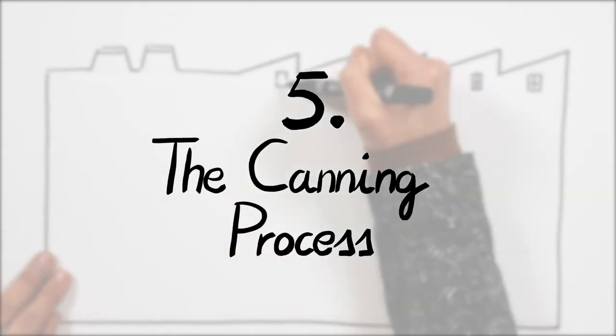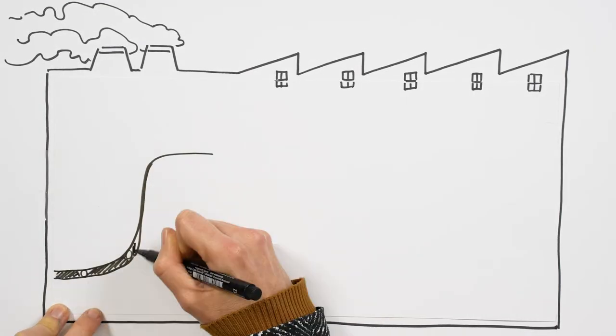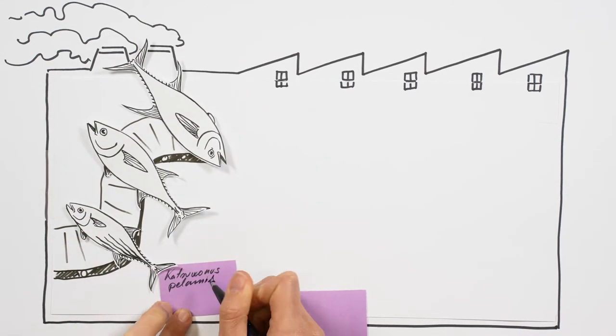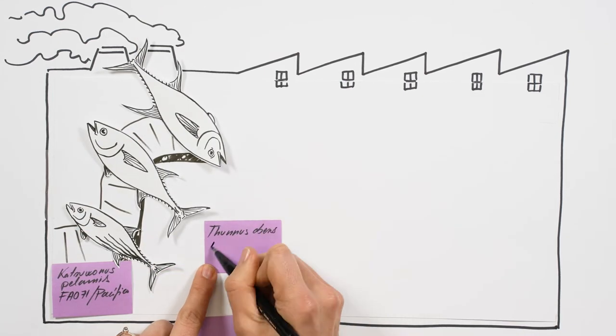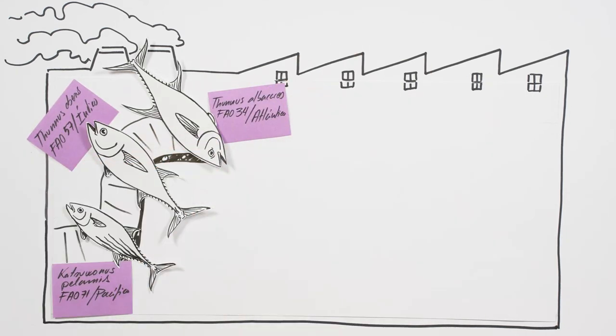And here we are at last at the cannery. For tuna to go in one end and cans to come out the other, a lot has to happen along the way. First, the fish is received and sorted while it's still frozen. Some canneries keep information about the species, where it was caught and how. Others don't.